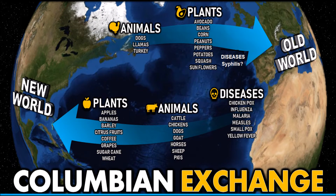The Columbian Exchange was the widespread transfer of human populations, plants, animals, precious metals, commodities, culture, technology, diseases, religion, and ideas between North America in the Western Hemisphere and the Afro-Eurasian Old World in the Eastern Hemisphere.